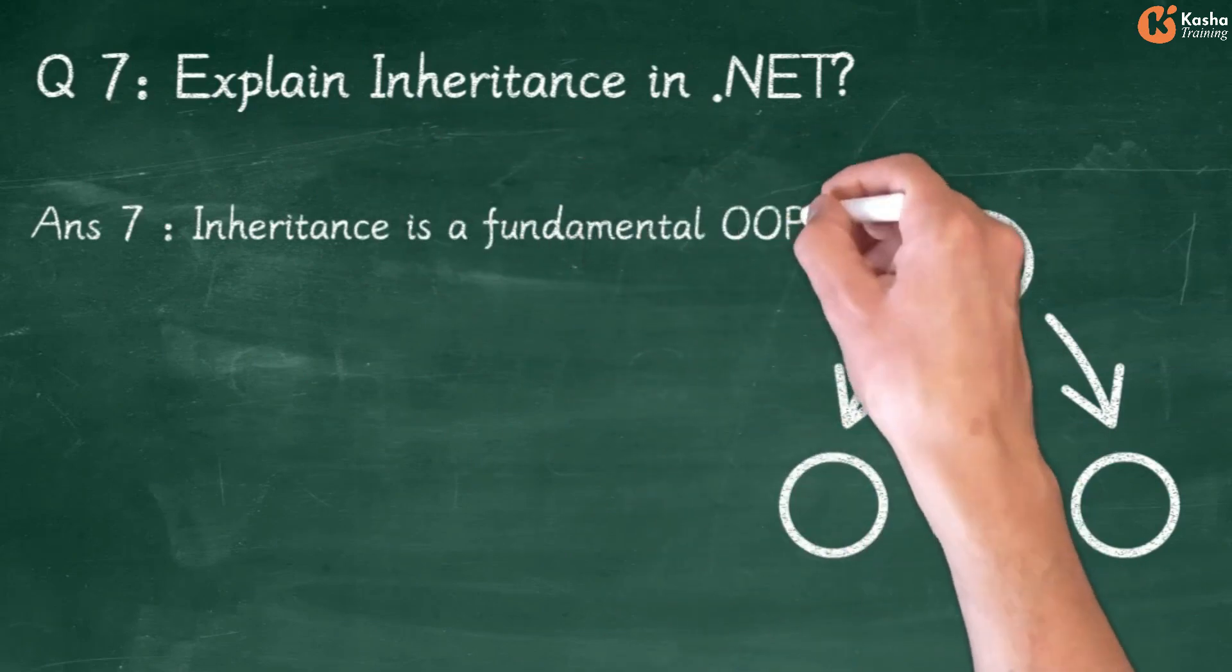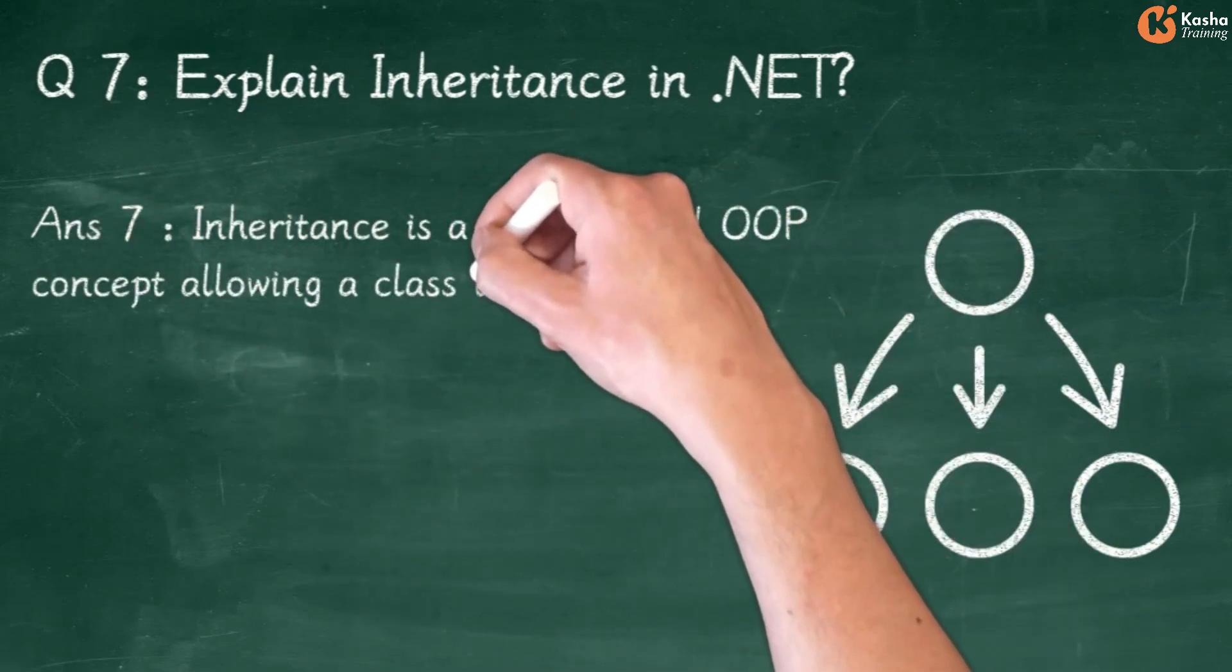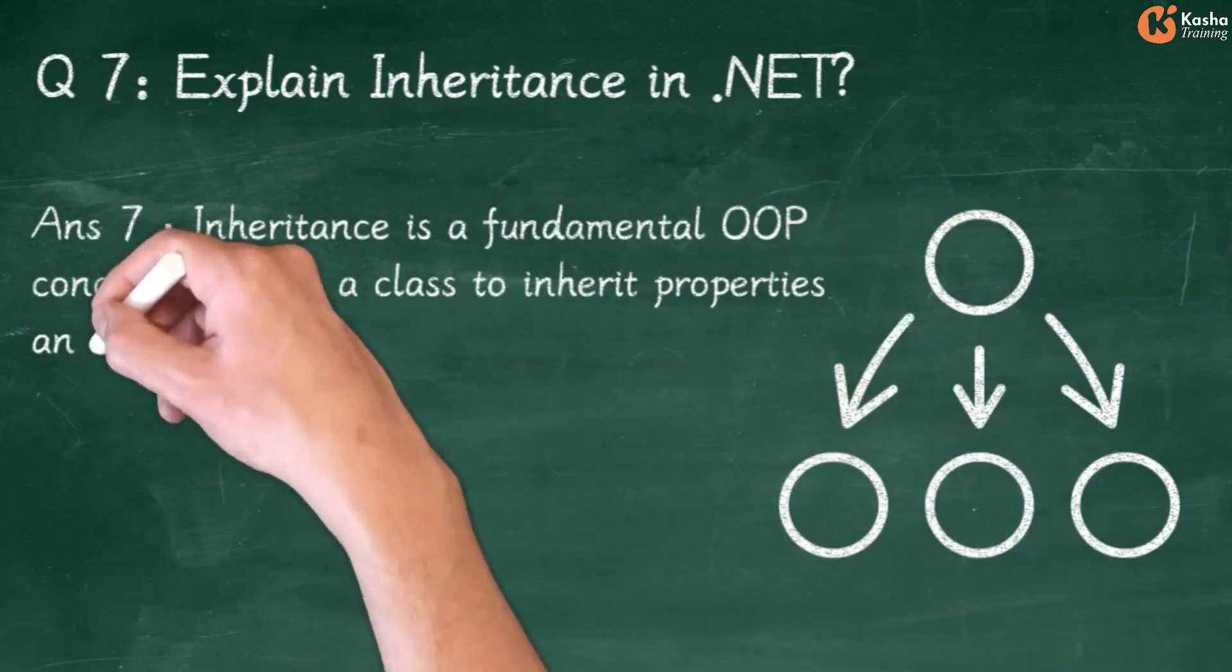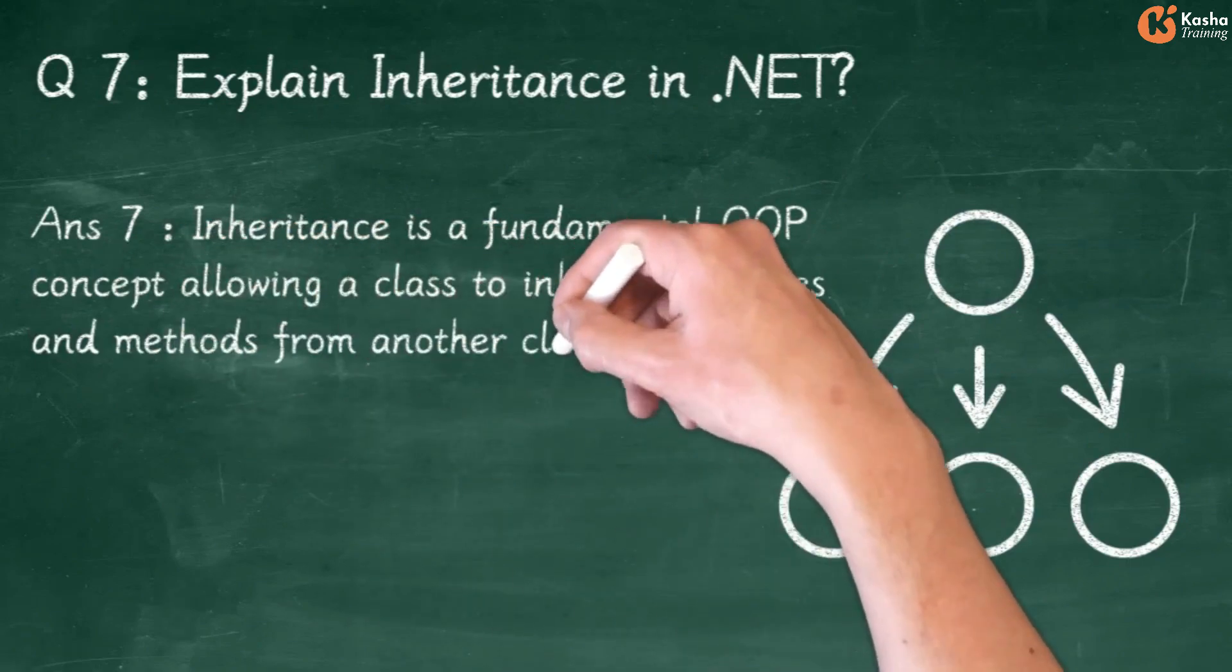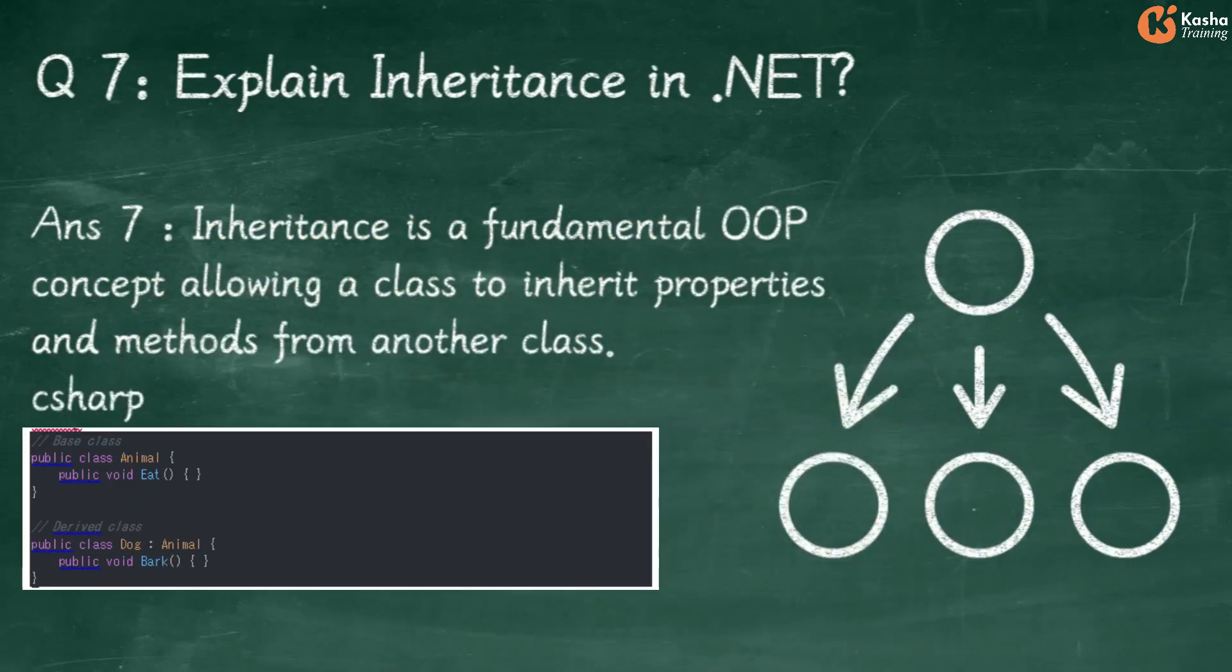Answer 7: Inheritance is a fundamental OOP concept allowing a class to inherit properties and methods from another class. In C#, the Base Class is Public Class Animal with Public Void Eat. The Derived Class is Public Class Dog inheriting from Animal with Public Void Bark.